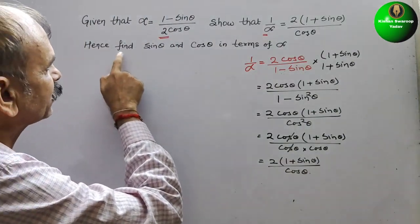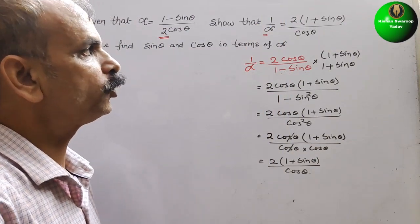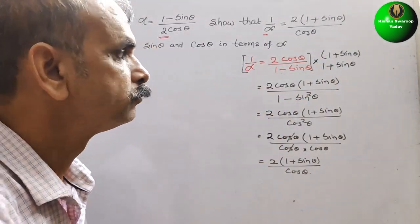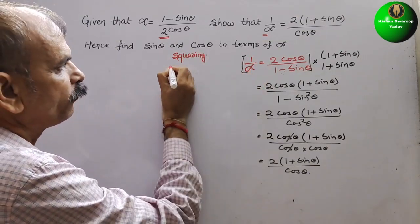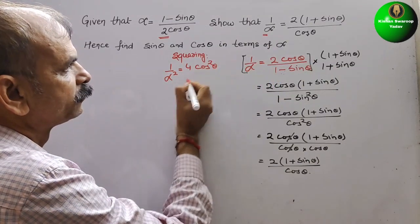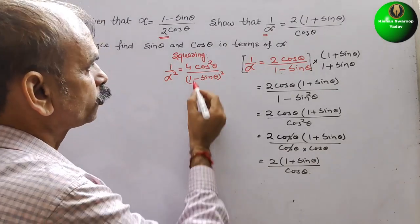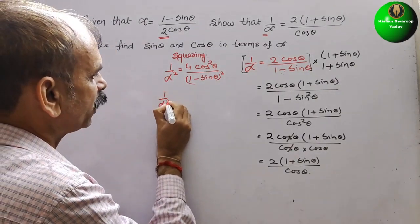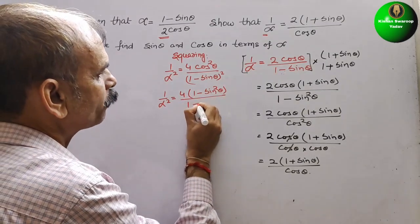The second part asks us to find sin theta and cos theta in terms of alpha. We will square the expression for 1 by alpha. So 1 by alpha squared equals 4 cos squared theta divided by (1 minus sin theta) whole squared. Converting cos squared theta using the identity gives 1 minus sin squared theta, so 1 by alpha squared equals 4 times (1 minus sin squared theta) divided by (1 minus sin theta) squared.